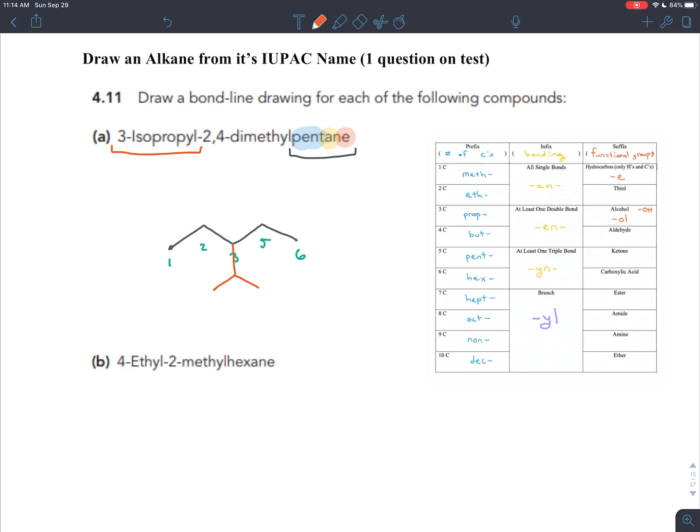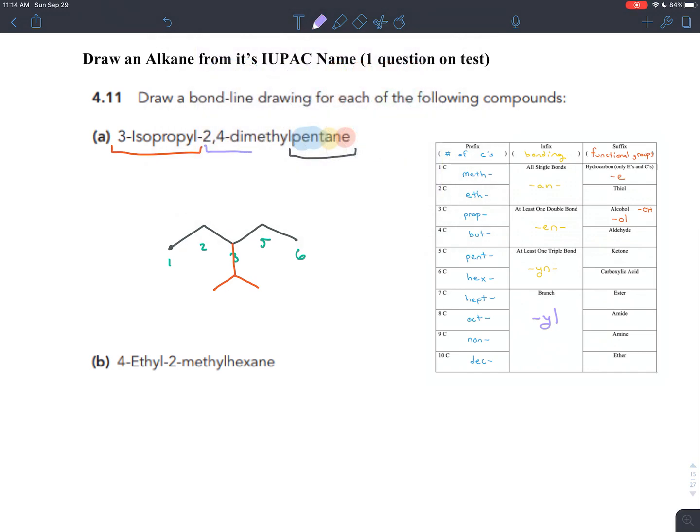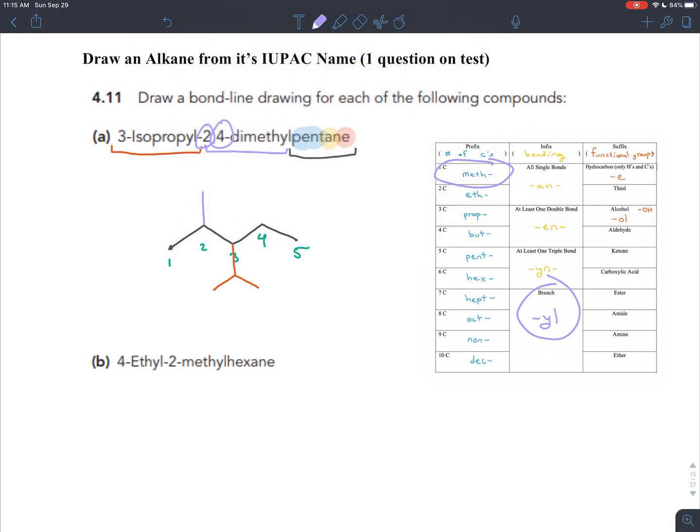It was one of those branches with branches that we talked about in a previous video and that you would want to have memorized. And then we have two methyl branches. Now a methyl branch has one carbon and it's a branch. So we're just going to be drawing one carbon here. One of these methyl branches is coming off of carbon two. And the other methyl branch is coming off of carbon four.